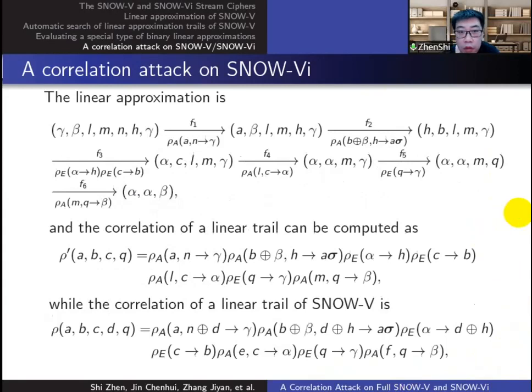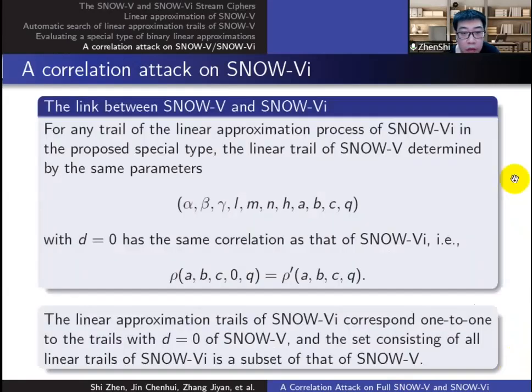Compared with the trails of SNOW-V, we have the observation that the linear approximation trails of SNOW-Vi correspond one-to-one to the trails with d equals zero of SNOW-V. And this observation indicates the set consisting of all linear trails of SNOW-Vi is a subset of that of SNOW-V.